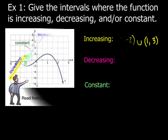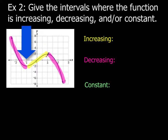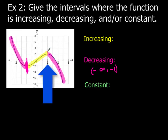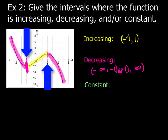Now let's go ahead and take a look at a second example. I've got two intervals where I have a negative slope and then right in between them a positive slope. Going from left to right, I've got a negative slope, so I'm going to be decreasing from negative infinity all the way up to x equals negative 1. I'm also decreasing from 1 onwards to infinity. Then I'm increasing only in between negative 1 and 1. No constant in this one.